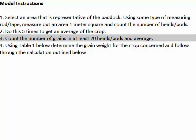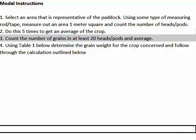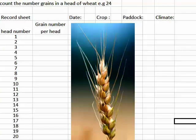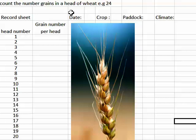In the third stage of the model, you will need to count the number of grains in at least 20 heads of grain if you're measuring wheat. You will see an image of a head on your slide — each kernel contains grains. You will remove these and count the number of grains across each head and record in the data sheet. It is important to also record other information such as the date, the crop, which paddock it comes from, and climatic variables like if it was wet or windy that day.